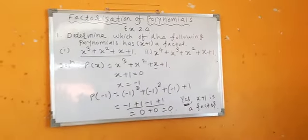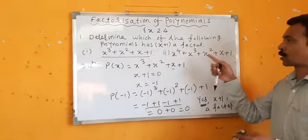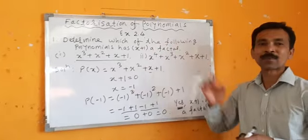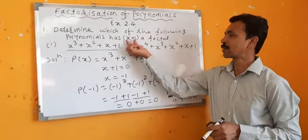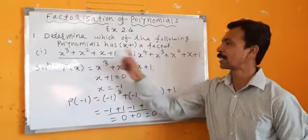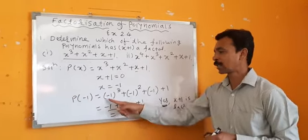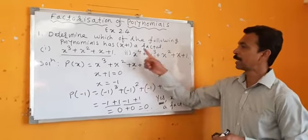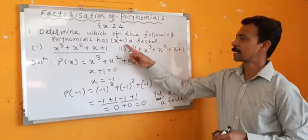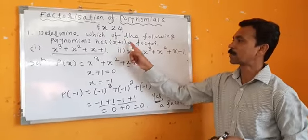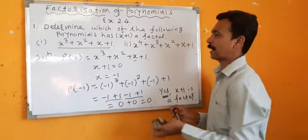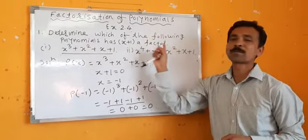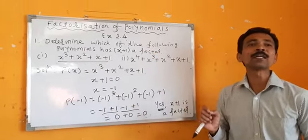Second sum. You understood the meaning: we have to check whether x plus 1 is a factor. That means you have to place the value of x in the given polynomial and do the calculations. If the remainder is 0, then you say yes, x plus 1 is a factor.